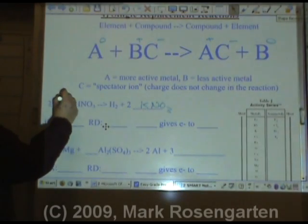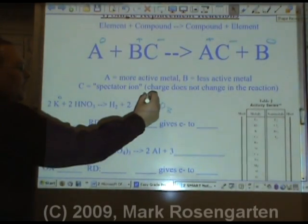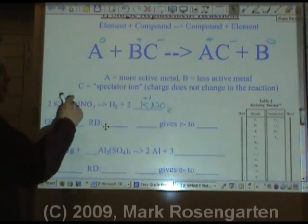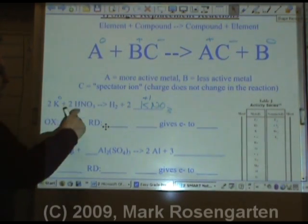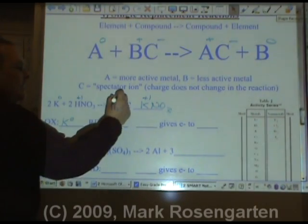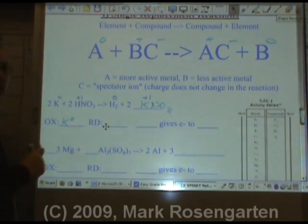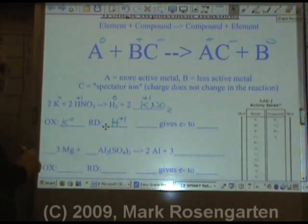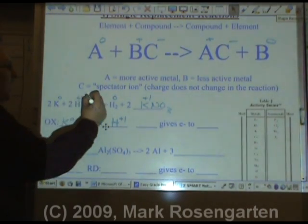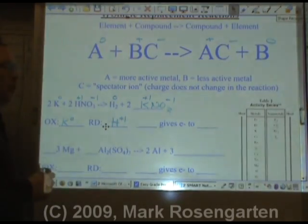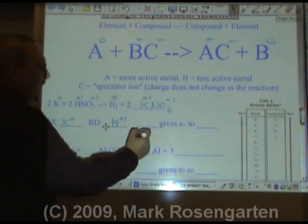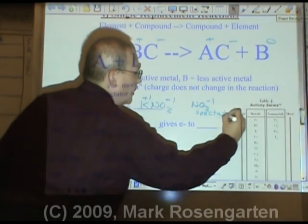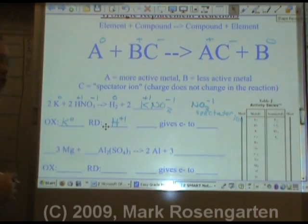K starts off as zero, but it ends as plus one. So K zero is oxidized because its charge becomes more positive. H starts off as plus one. It ends as zero because it's not bonded to another element. Therefore, H plus one's charge went down, it's reduced. But the nitrate remained minus one on both sides.